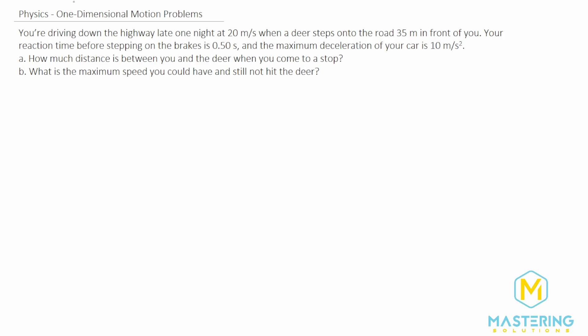Before we get into the different parts, let's draw a picture of what's happening to understand conceptually, which will really help us with organization. We have a car going along, and the deer steps out in front of us. We stomp on the brakes half a second later. So here's where we're going at constant speed, and at this point is where we step on the brakes. Then down here is where we actually stop, and we have a deer right over here.